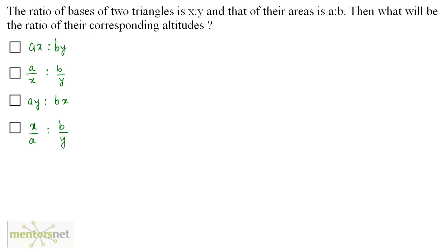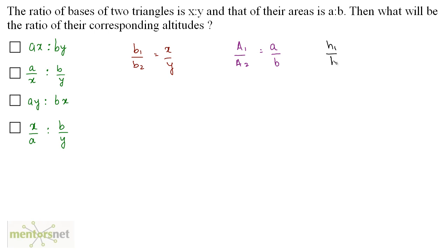The ratio of the bases of two triangles is x to y. So B1/B2 = x/y. The ratio of their areas is A to B, so A1/A2 = A/B. We want the ratio of their altitudes, that is h1/h2.